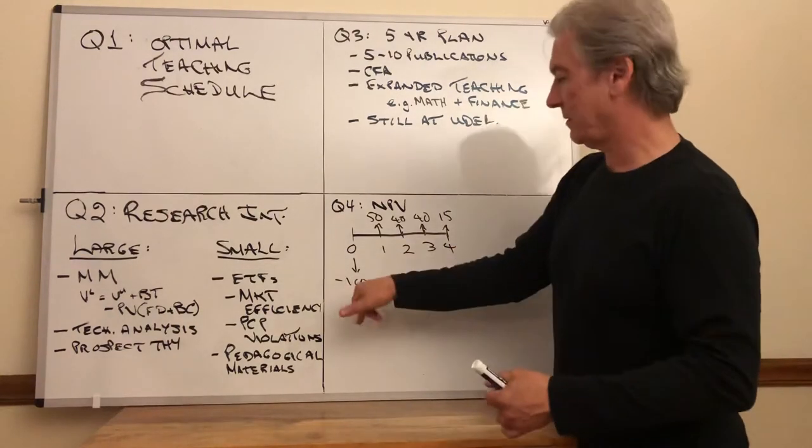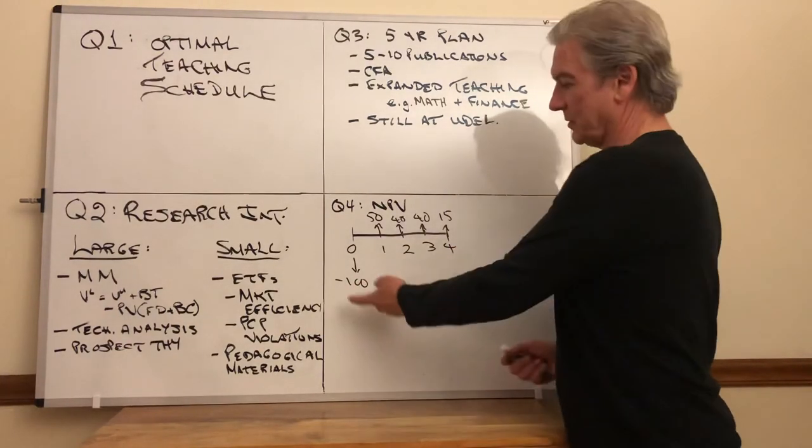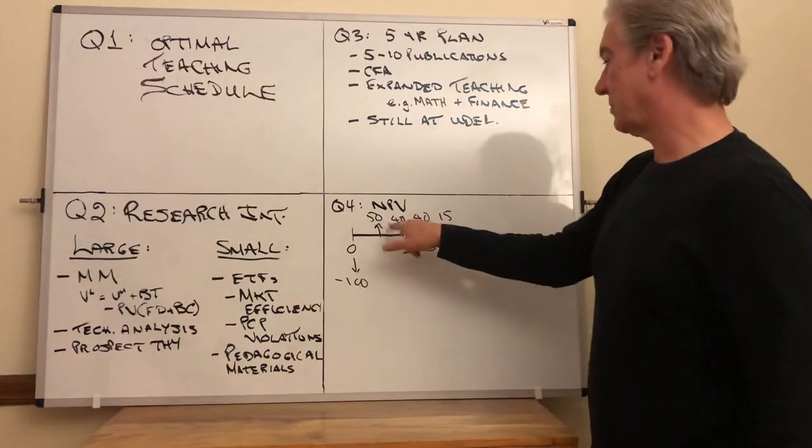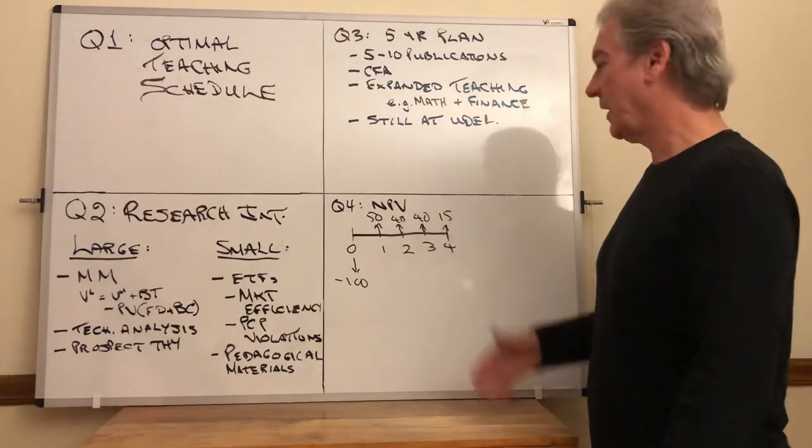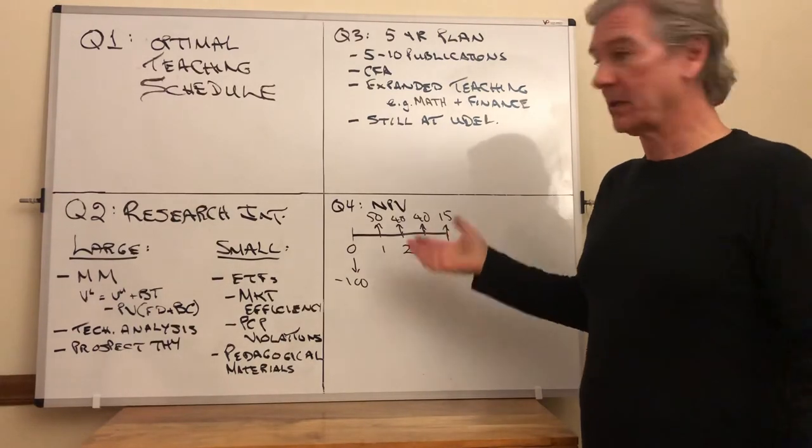It has four periods: minus 100 at time zero, so that'd be the initial investment cost. Generates cash flows of 50, 40, 40, and 15. And the question is, should you make this investment or not?